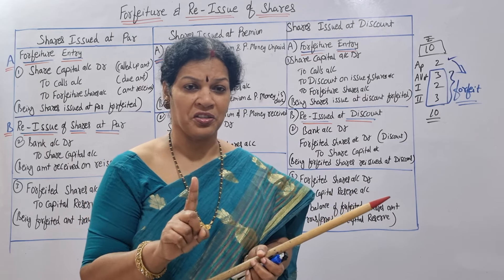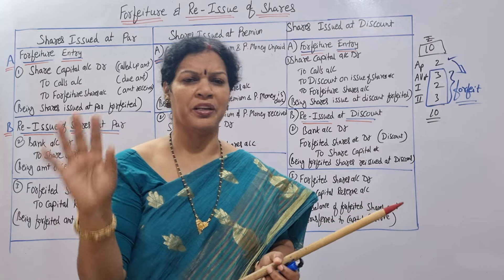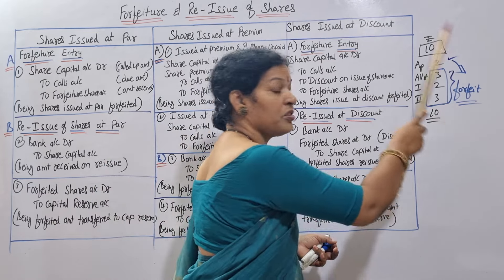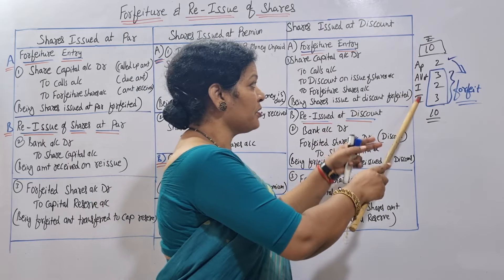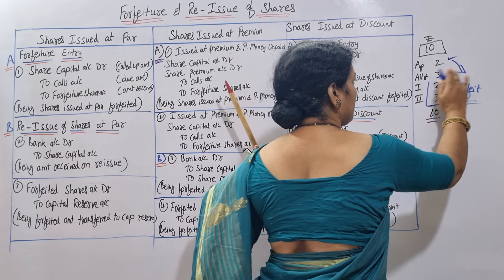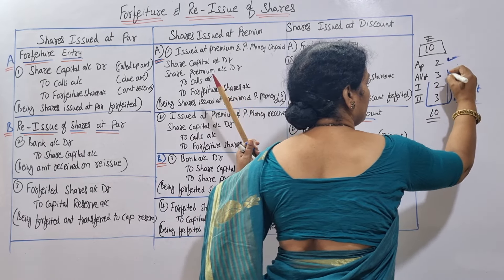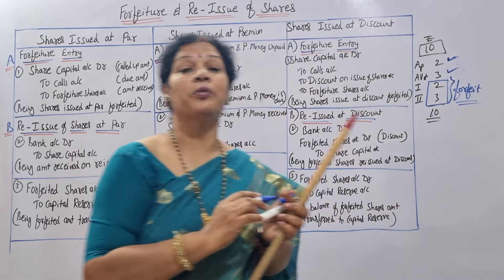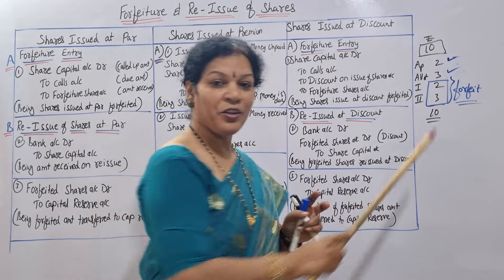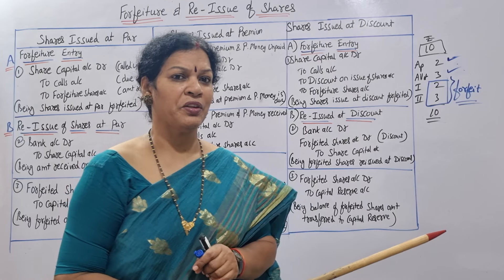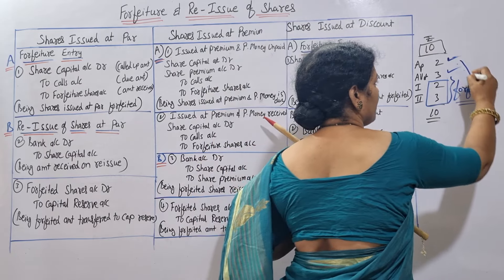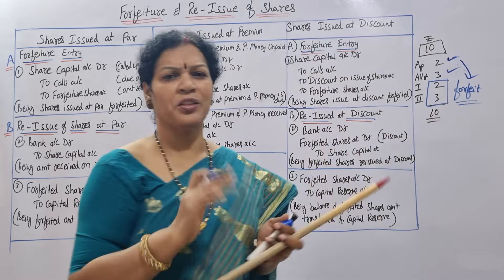For forfeiture and reissue of shares, we will have three entries apart from the normal issue entries we already know. Only three entries to learn. For example, suppose he paid application amount and allotment also, but first call and second call he could not pay - that is 5 rupees already paid, first call and second call 5 rupees he did not pay. Company gave notification but he did not respond.